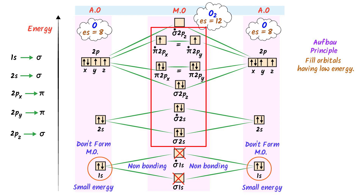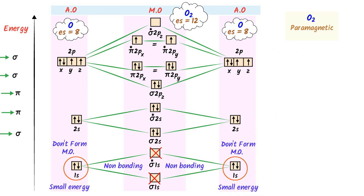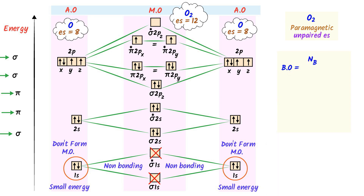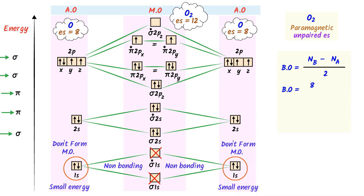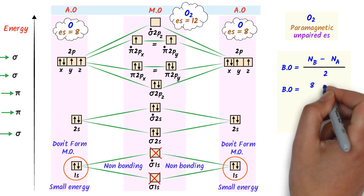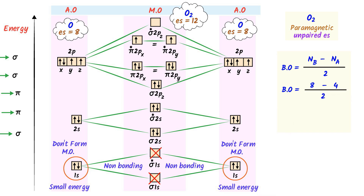This is the molecular orbital diagram of oxygen molecule. Remember that oxygen molecule is paramagnetic in nature because it has 2 unpaired electrons in pi star 2px and pi star 2py. Its bond order equals the number of electrons in bonding molecular orbitals minus the number of electrons in anti-bonding molecular orbitals, divided by 2. There are 8 electrons in bonding MOs minus 4 electrons in anti-bonding MOs, giving a bond order of 2.